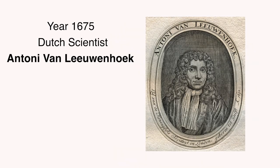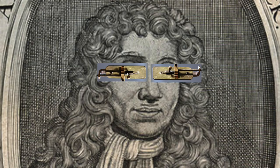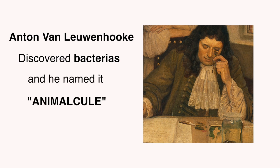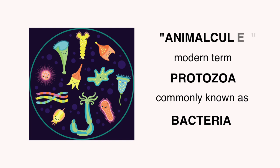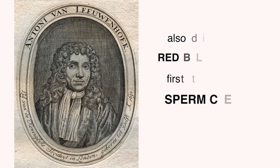Not long after, in the 17th century, another Dutch scientist named Anton van Leeuwenhoek created a more advanced microscope with a maximum magnification of 300 — which, by the way, looked like this, and having two combined together it would look like sunglasses. Leeuwenhoek discovered bacteria while viewing scrapings from his teeth and the teeth of others, calling them Animalcules. We call Animalcules in modern biology as protozoa, or commonly termed as bacteria. He also discovered red blood cells and was the first person to see living sperm cells in animals, and hypothesized that maybe cells come from pre-existing cells.